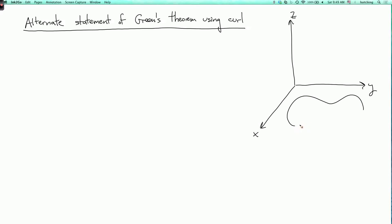So here's our surface R. It's in the x-y-plane, and it has a boundary curve C. And the usual state Green's Theorem involves a vector field F on the x-y-plane, but I'm going to think of this as being a vector field in three-dimensional space where the z-component is equal to zero.